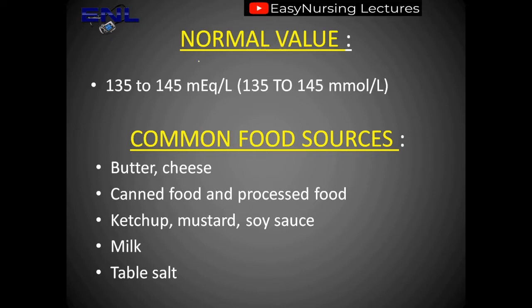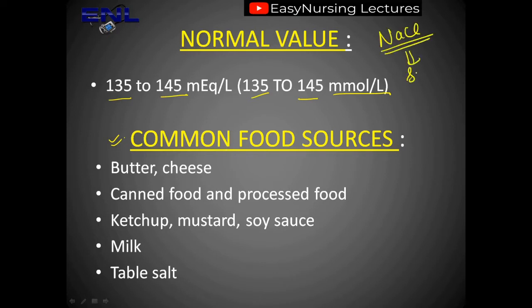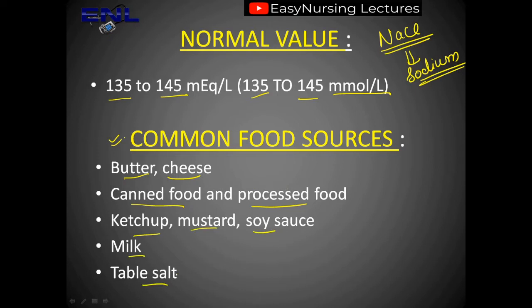So what is the normal value of sodium in our body? It is 135 to 145 milliequivalents per litre. If we talk about common food sources that include sodium, everything related to salt is included because sodium is NaCl. This includes butter, cheese, canned food, processed food like chips, ketchup, mustard, soy sauce, milk, and table salt. These are the common food sources from where we get sodium.